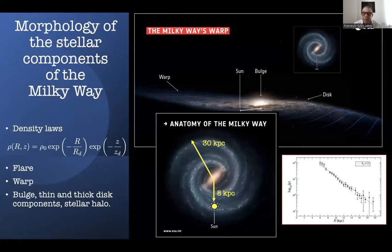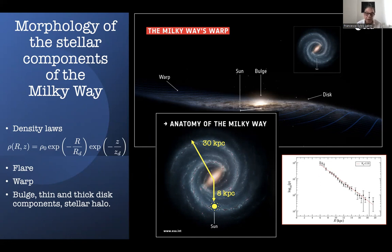Let's start from the Milky Way. These are the basic properties of the disk. The density is modeled as a double exponential, one in function of the radius and the other in function of the vertical distance. The Sun is at 8 kiloparsecs from the center, and the disk is about 30 kiloparsecs. Beyond these properties, we know that there is a flare, a warp, and different components: a bulge, a thin and thick disk, and a stellar halo.